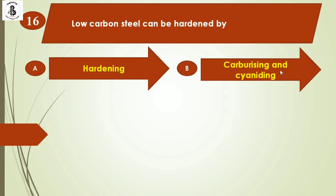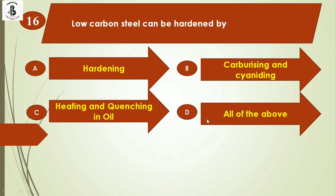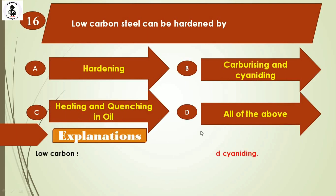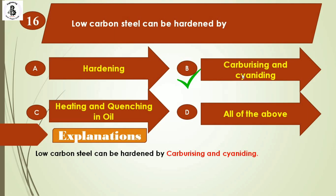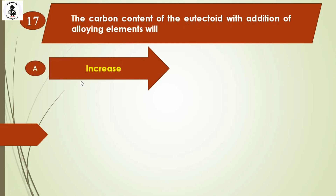Question 16: Low carbon steel can be hardened by — Option A: hardening, Option B: carburizing and cyaniding, Option C: heating and quenching in oil, Option D: all of the above. Low carbon steel can be hardened by carburizing or cyaniding process. The right answer is Option B.